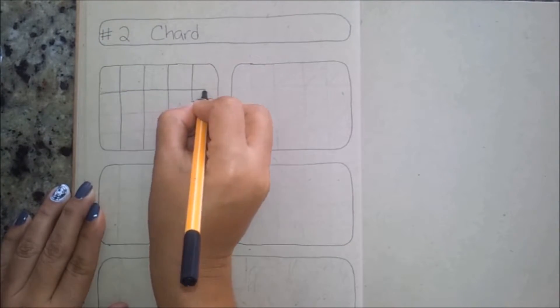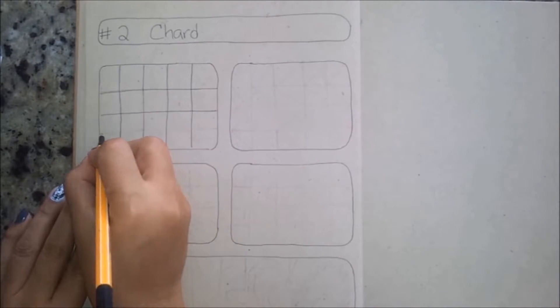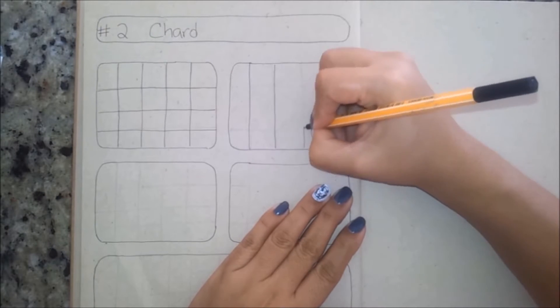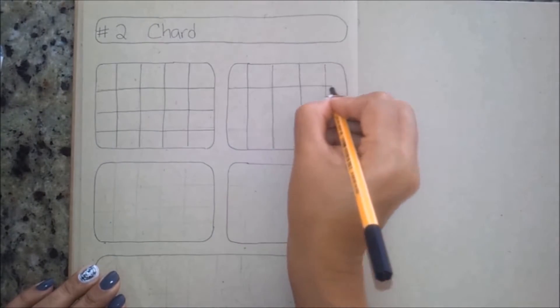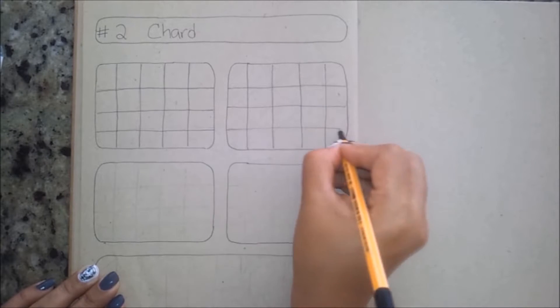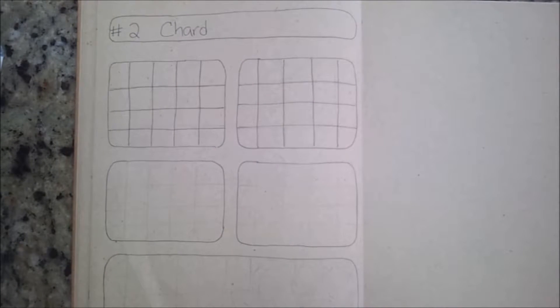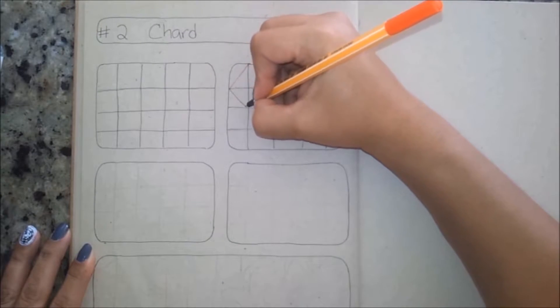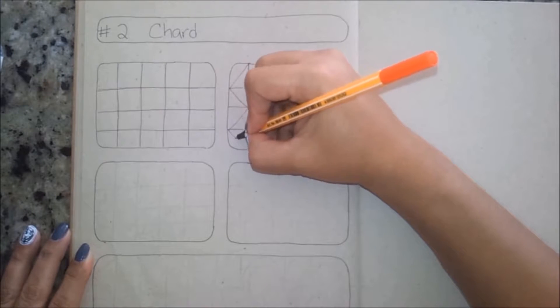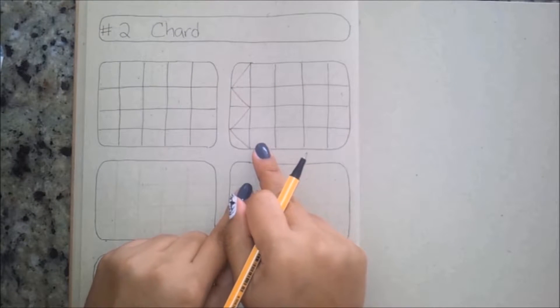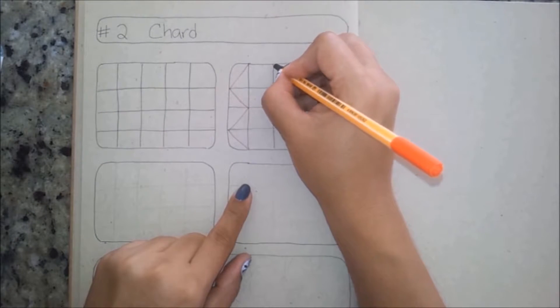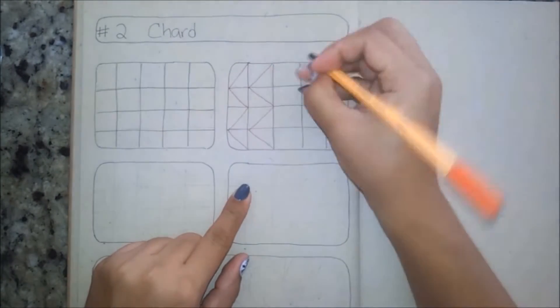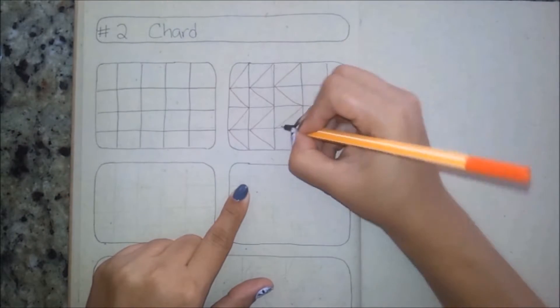Step number two, we're gonna repeat what we did in step number one and add diagonal lines dividing the squares. You're gonna make sort of a zigzag kind of line dividing the squares with these diagonal lines like I'm doing here. We're gonna repeat that throughout the whole grid.